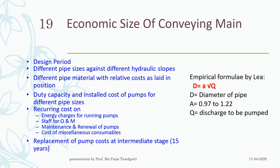Third: different pipe materials with their regular laid cost — what type of material has been used. Fourth: the duty capacity and installation cost of pumps for different pipe sizes. As the diameter varies, pressure also varies, and to maintain that pressure you need to select the appropriate pumps.